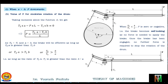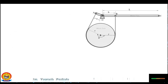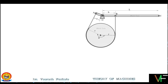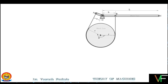In today's lecture we will discuss the second configuration of the differential band brake and derive the relation for the applied force. We will also analyze whether this configuration will be self-locking, and if so, what the condition of self-locking will be, analyzing both clockwise and counterclockwise directions.